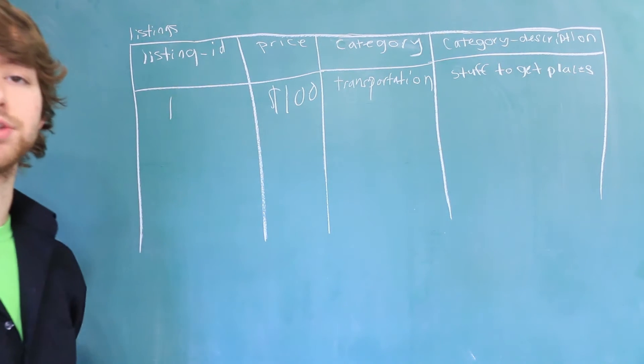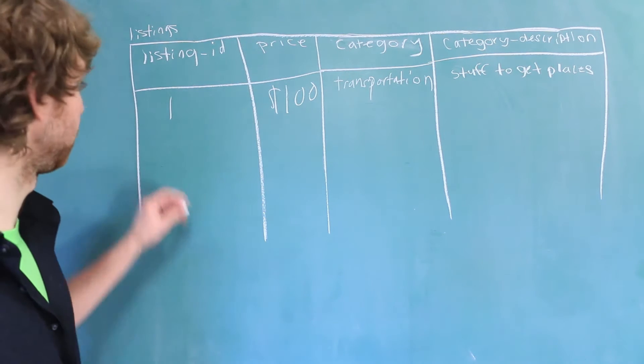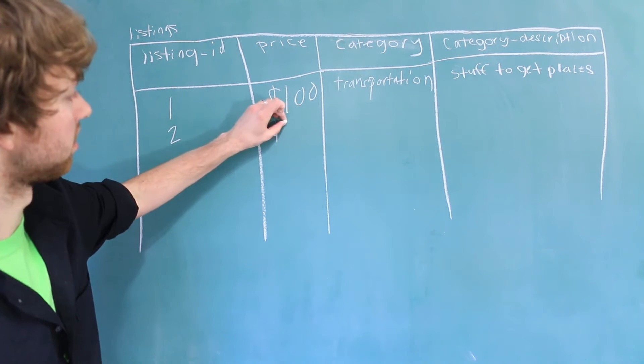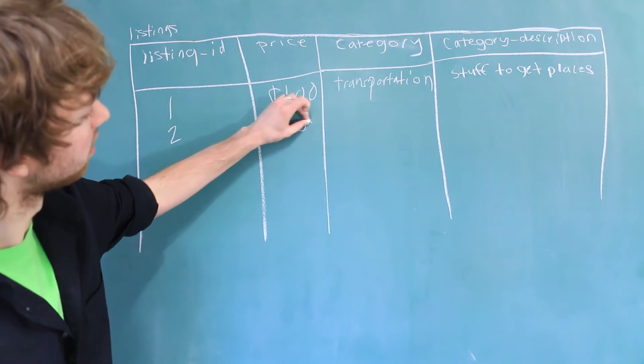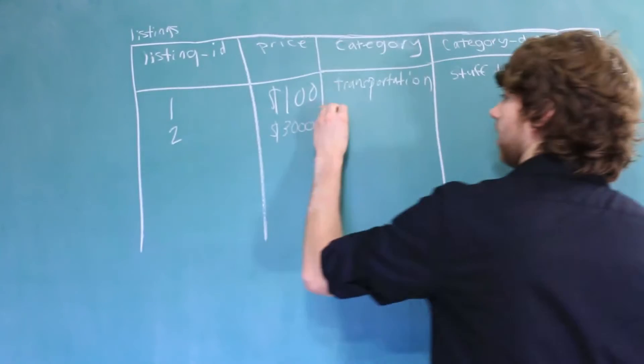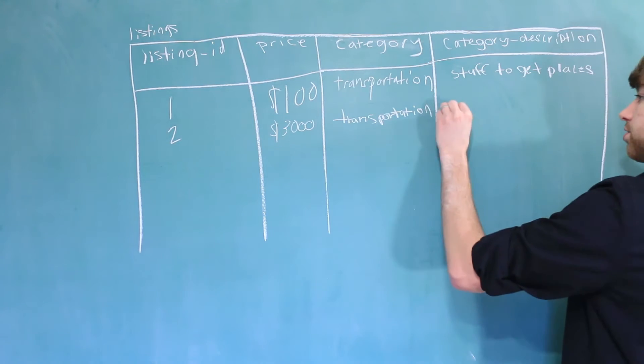Now let's say someone else gets on here and adds a car to the website. Listing ID of 2. Its price is $3,000. Its category is transportation. And it has the same category description.